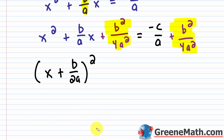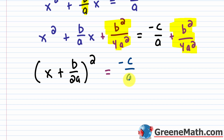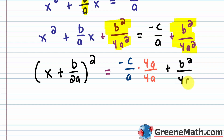On the right side we need a common denominator. We have −c/a, and the denominator we need is 4a². We're missing a factor of a and a factor of 4, so multiply −c/a by 4a/4a, which equals 1. This gives us −4ac/4a² plus b²/4a².